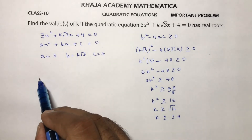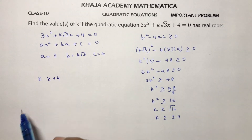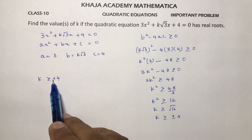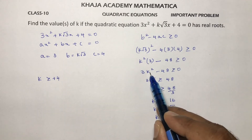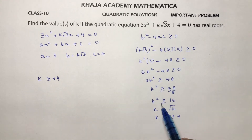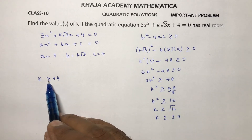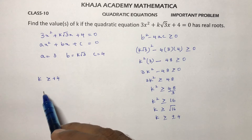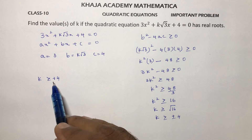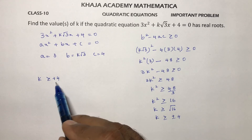If k ≥ +4, this condition is satisfied because k² ≥ 16 holds. For example, substituting k = 5 or 6 or 7 — values greater than or equal to 4 all work.